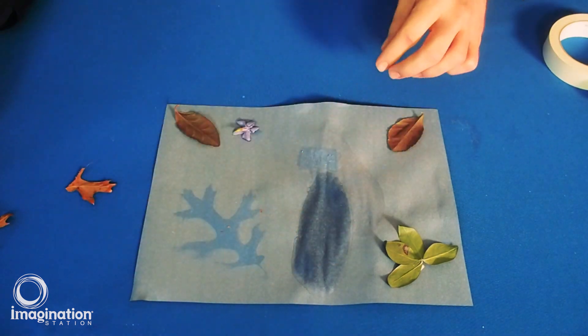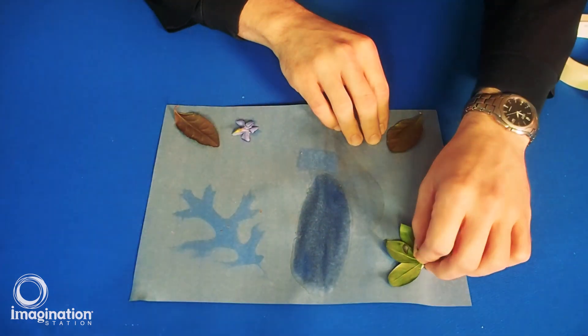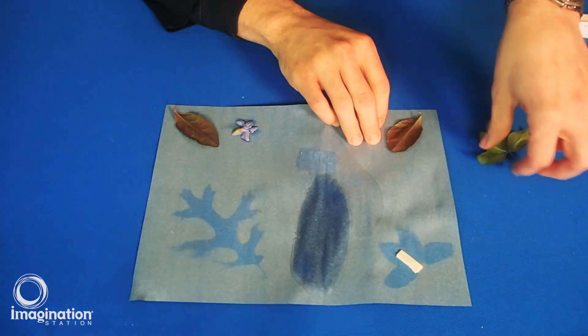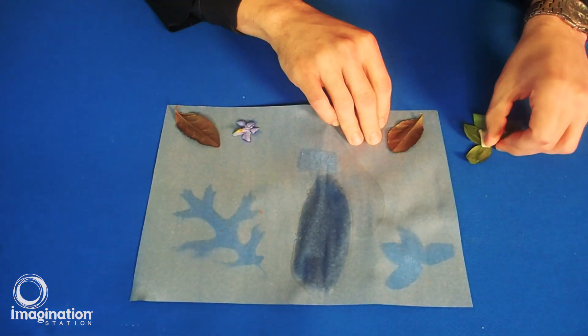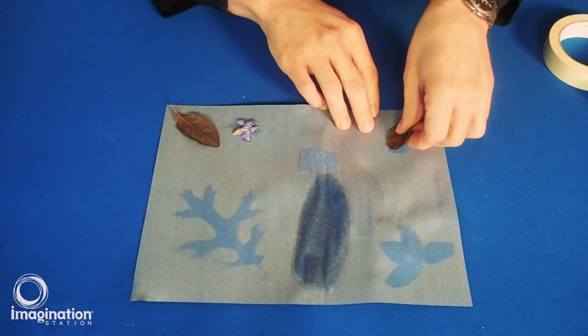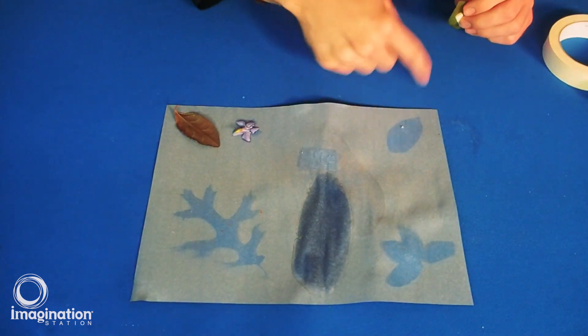The color of your construction paper is a result of dyes that absorb some of the colors of visible light and reflect others. The colors of visible light that are reflected are the colors that you see.